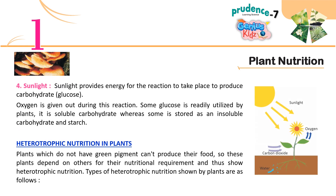Sunlight provides energy for the reaction to take place to produce carbohydrate — glucose. Oxygen is given out during this reaction. Some glucose is readily utilised by plants; it is a soluble carbohydrate, whereas some is stored as an insoluble carbohydrate — starch.